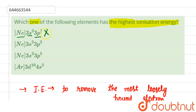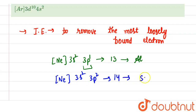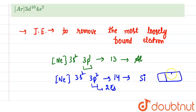So from here we can say that option one is not correct. Let us look at option two: [Ne] 3s2 3p2. This is the electronic configuration of element 14, whose name is silicon. Here in the p orbital, two electrons are present.